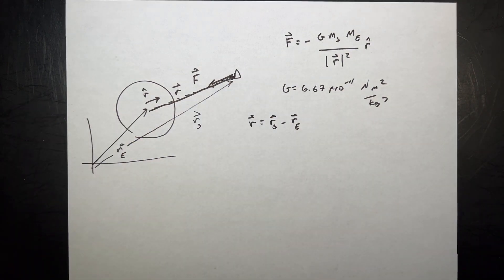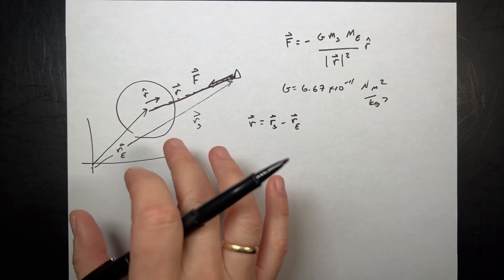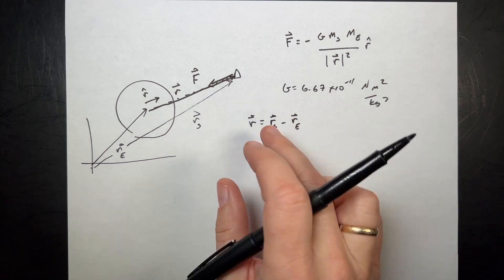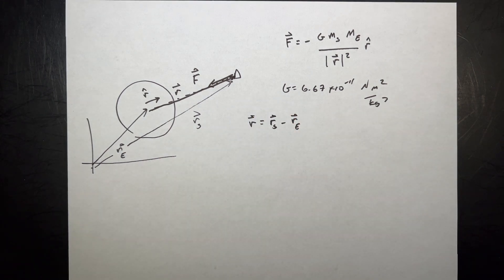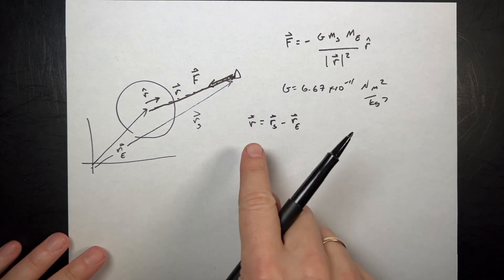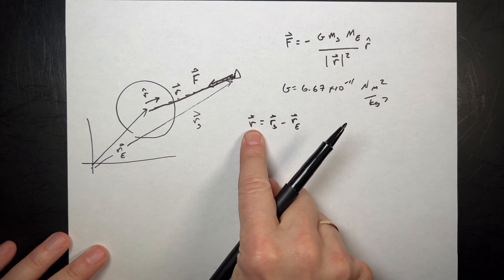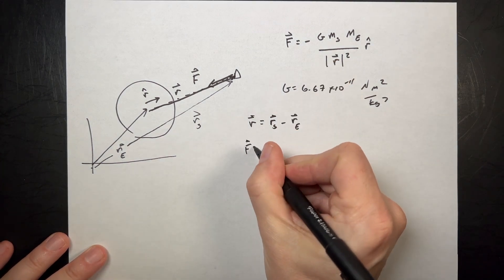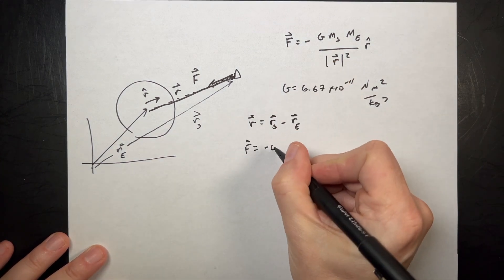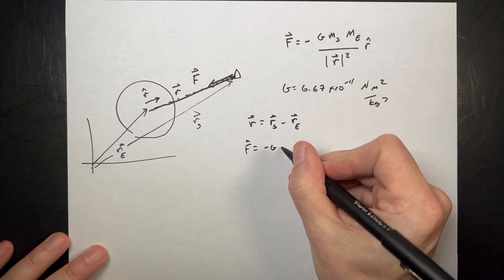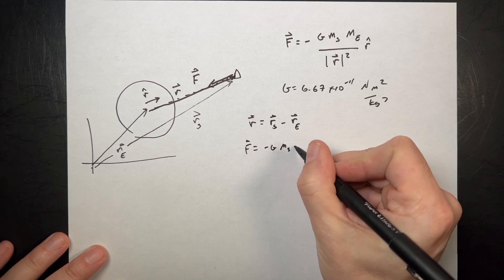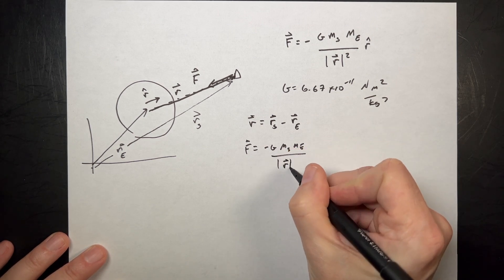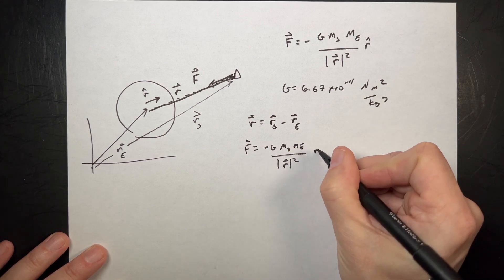Now we are doing the simplest possible case. The Earth is not going to move — the mass of the spacecraft is very, very small compared to that, and that's fine. So we calculate R, then calculate the force. I'm going to rewrite it: negative G times MS times ME over the magnitude of R squared, times R hat.